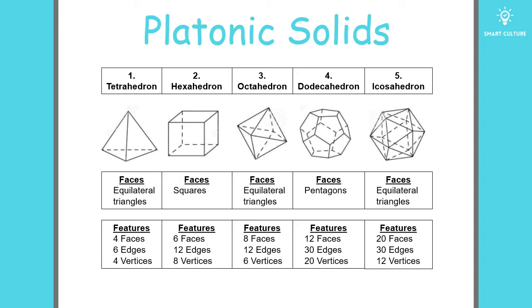Moving on to a hexahedron or cube, you can see that the faces are all squares. A hexahedron has six faces, 12 edges, and eight vertices.